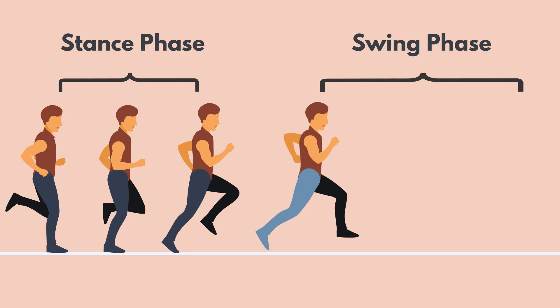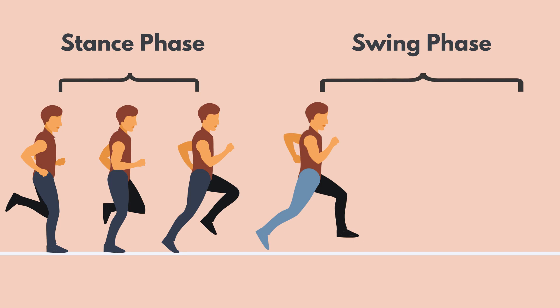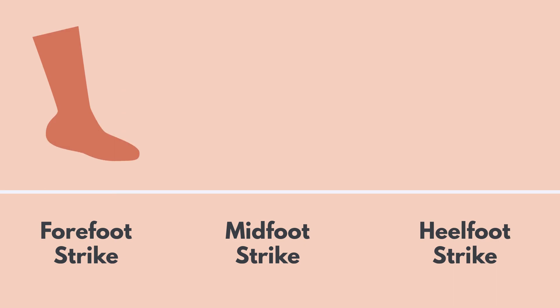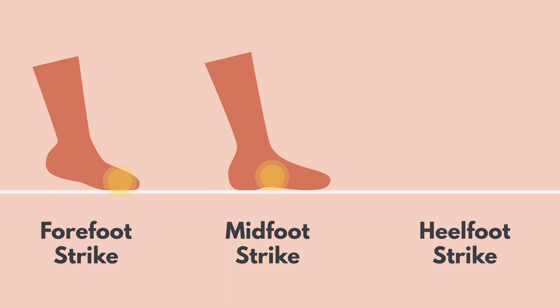The part of the foot that strikes the ground can also fit within one of three categories: a forefoot strike, a midfoot strike, or a heel strike. In the forefoot strike, the top portion of the foot — i.e. the toes — strikes the ground first. In the midfoot strike, the midfoot part of the foot, usually near the ball of the foot, strikes the ground first. And in the heel strike, the back of the foot — i.e. the heel — strikes the ground first, before rolling forward to push off with the toes for the next running stride.